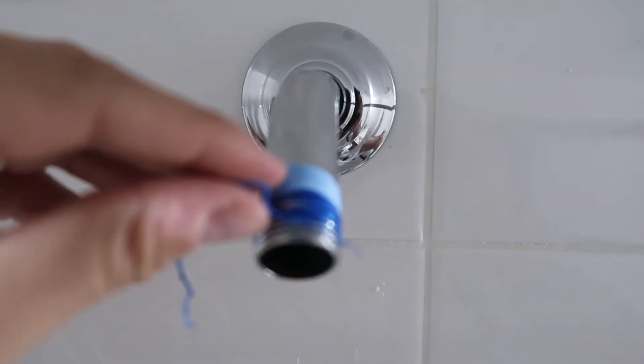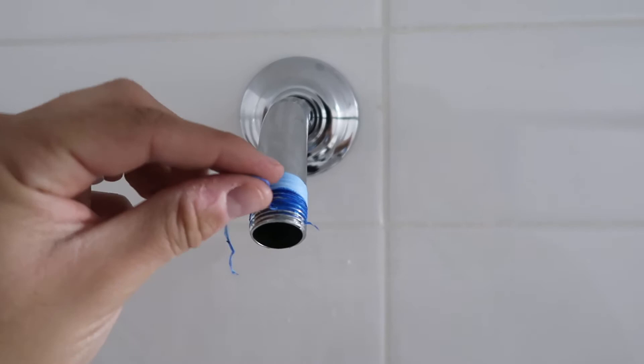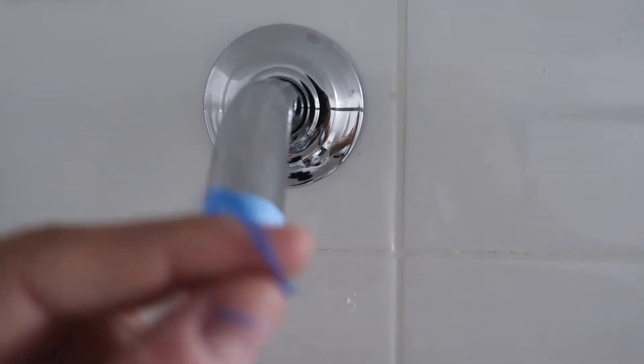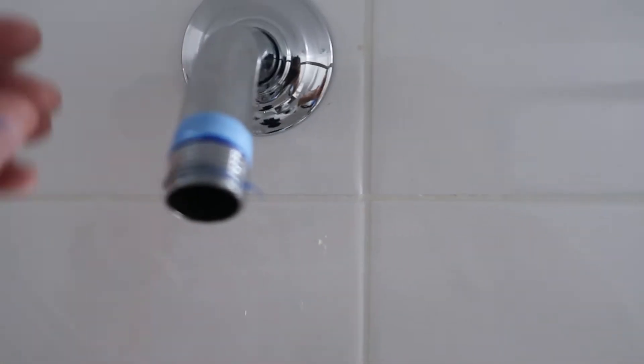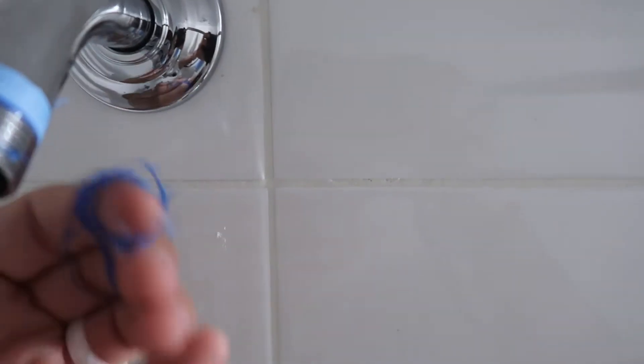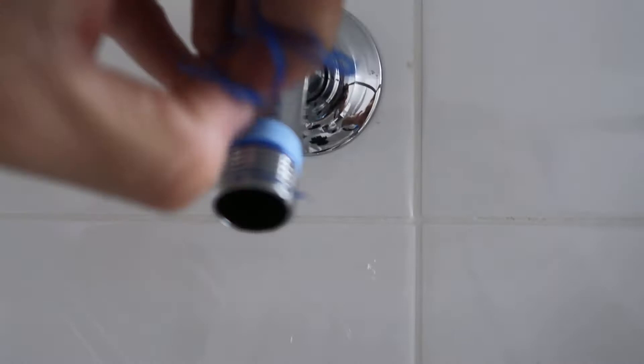Once you take this off, you want to take off all this old Teflon tape or putty, whatever is on yours, because it won't stick as well. You want to just take all this off because we're going to put fresh on after. Just rip it off and onto the next step.